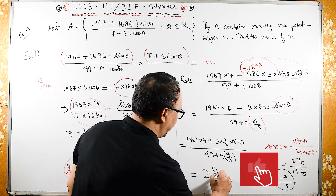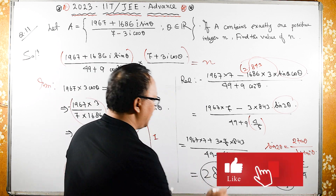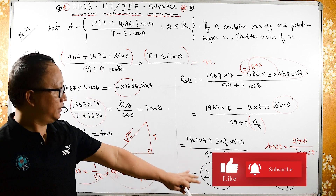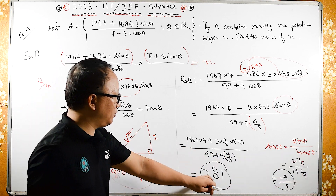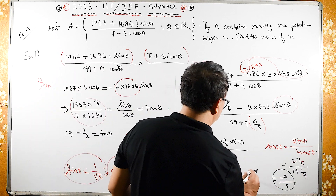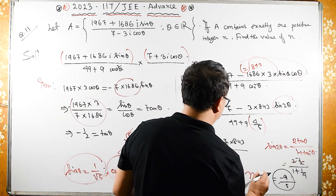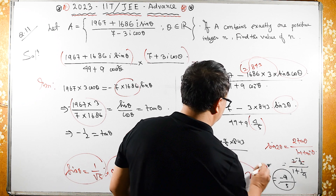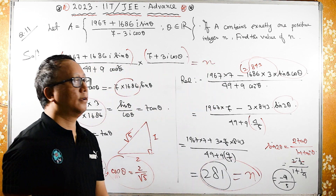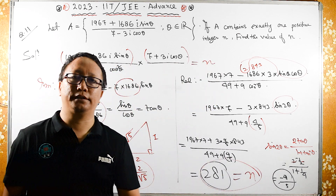If you solve this expression, you will get 281. I am leaving the final calculation as an assignment. So n equals 281. Thank you.